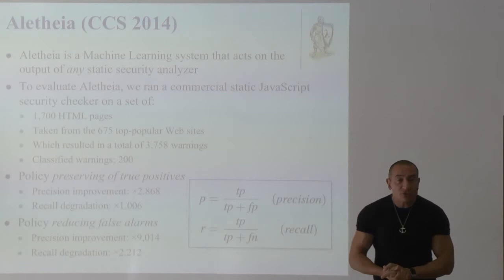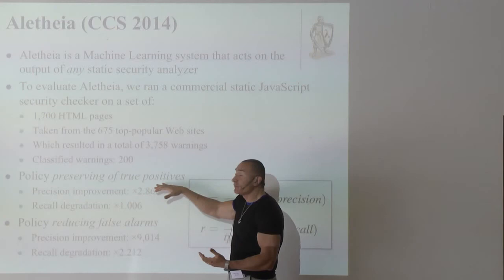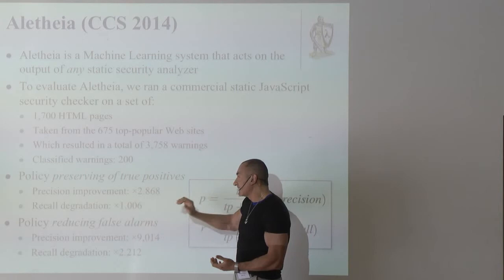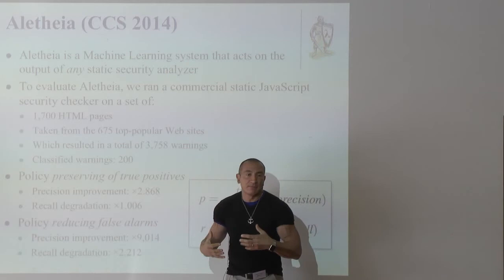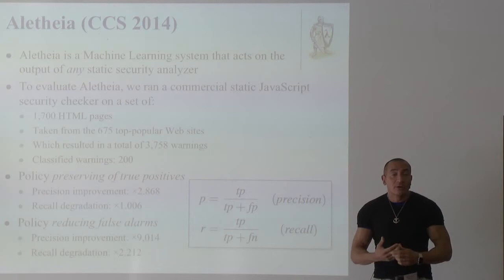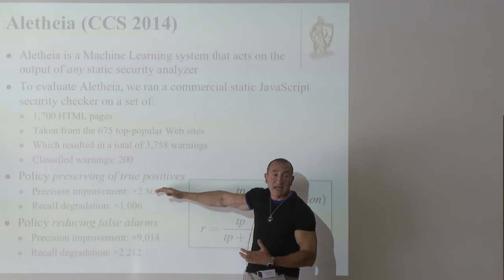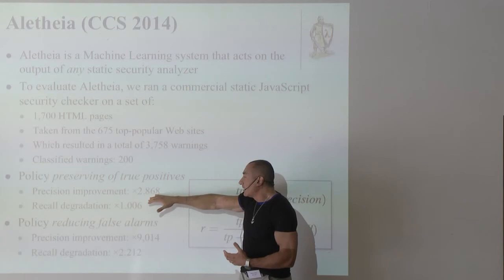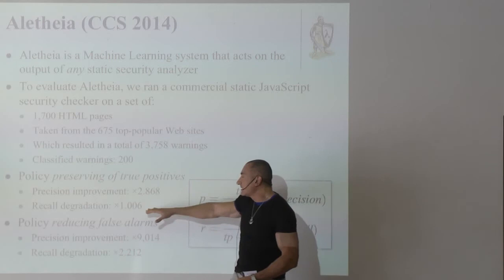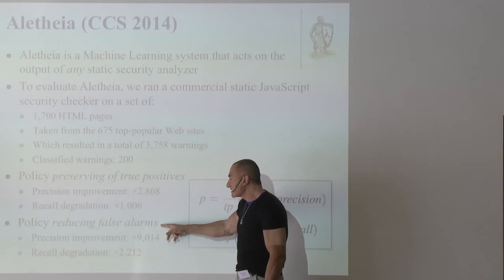We wanted to make both groups happy: those biased toward preserving true positives, and those wanting to reduce false positives. For users biased toward preserving true positives — who can accept spending more time on false positives as long as true positives are not discarded — we achieved a precision improvement of a factor of 2.868 with a recall degradation of only 1.006. And if the policy is biased toward reducing false alarms, the results are even more dramatic.